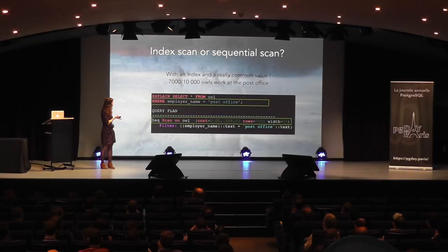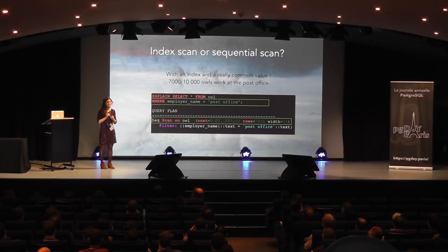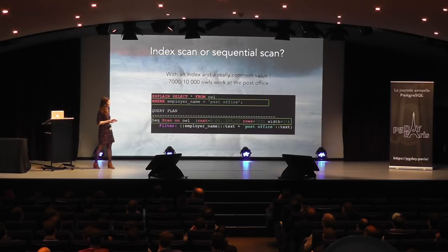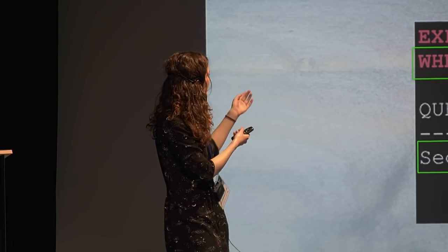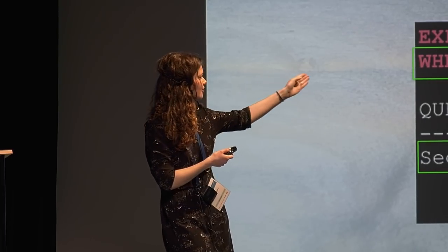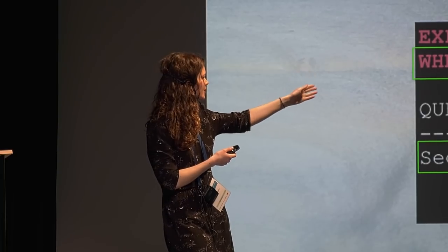But just because you have an index doesn't mean your database will use it. For example, if most of my owls — 7,000 out of 10,000 — work at the Post Office, querying for employer name = 'Post Office' still uses a sequential scan, even though an index exists on that column.